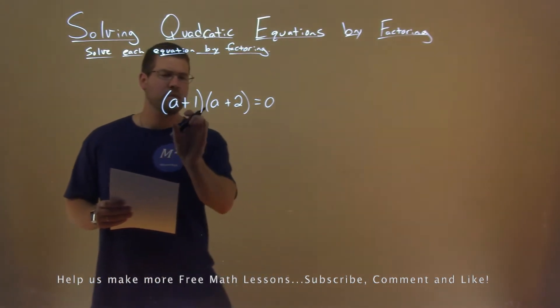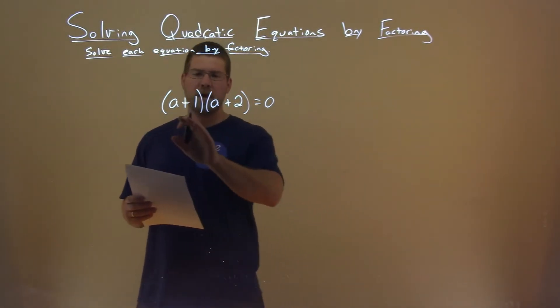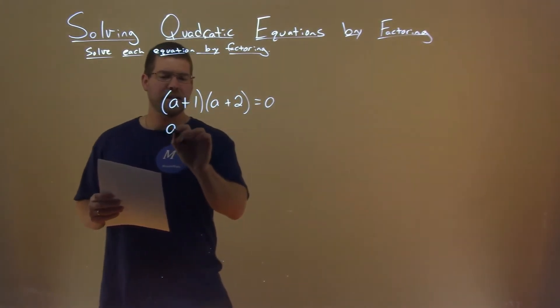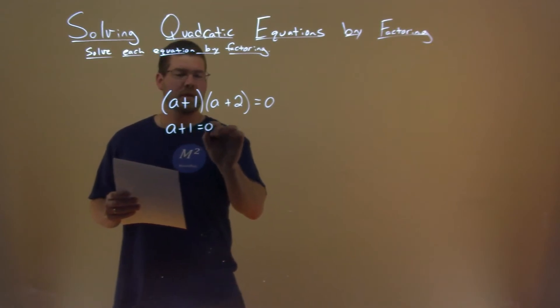Well luckily for us this is already in factored form. We have a plus one times a plus two. Since it's equal to zero we can set each part equal to zero.